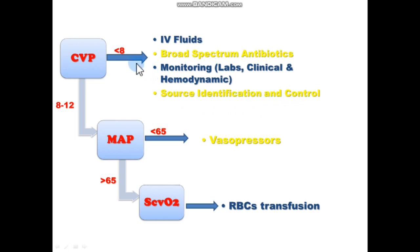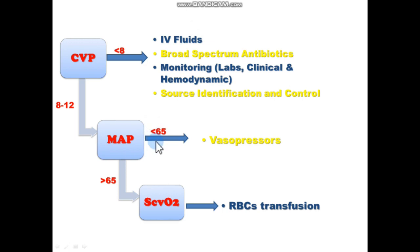When the target central venous pressure of 8 to 12 is achieved, we also measure the mean arterial pressure. If despite all measures the mean arterial pressure remains less than 65, we give a vasopressor — and norepinephrine is the first line, unless there is significant bradycardia or significant tachycardia.